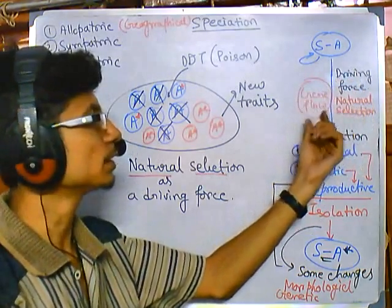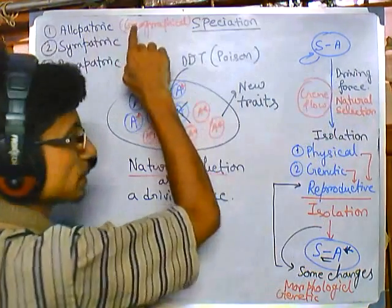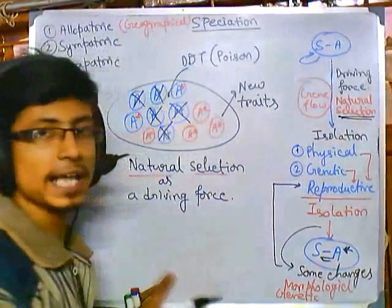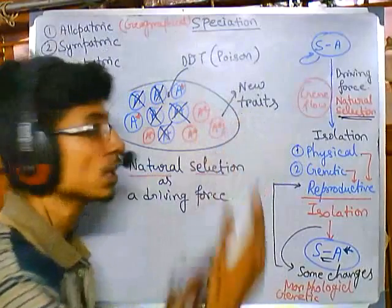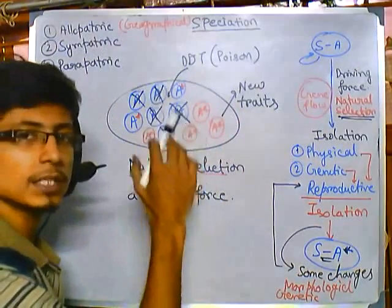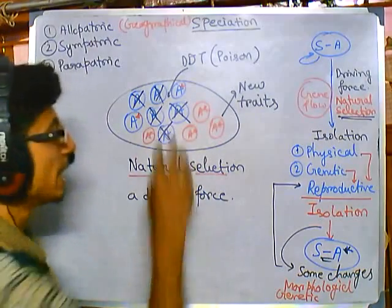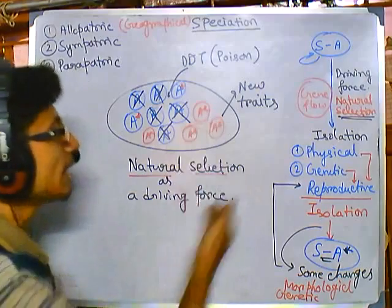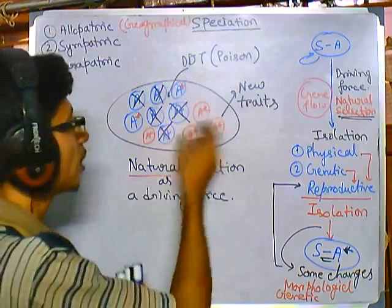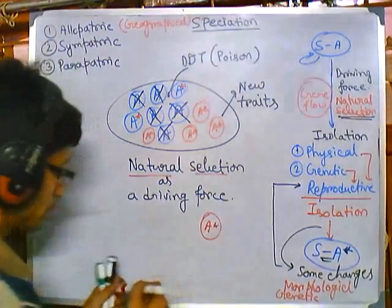The driving force for isolation can be gene flow or natural selection. We saw gene flow as the driving force in allopatric speciation. In this case, natural selection is acting as the driving force over gene flow, selecting certain individuals among the species to persist for a longer period of time, during which they start achieving new and important traits.